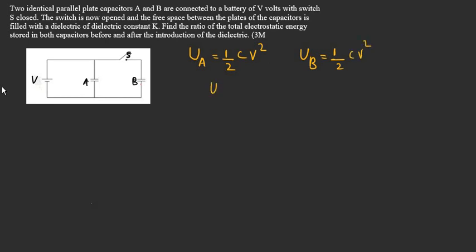So the total initial energy will be equal to UA plus UB. Adding these two gives CV². This is the initial electrostatic energy stored in both capacitors.